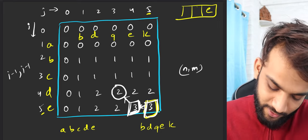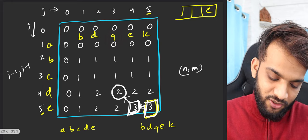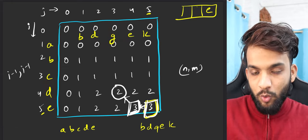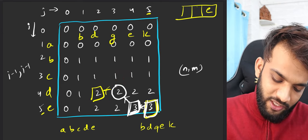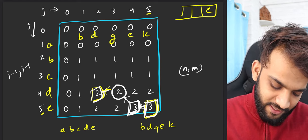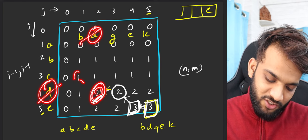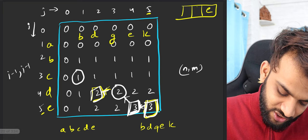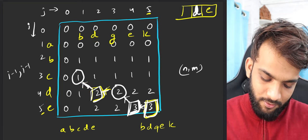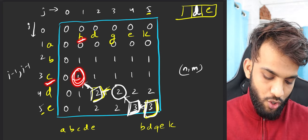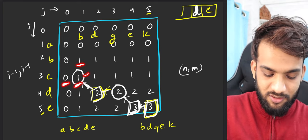Now you're at dp[3][3] = 2. Does 'd' match 'g'? No — so move to the max. Now you're at dp[3][2]: 'd' from s1 and 'd' from s2 — they match! So this 2 came from 1 + dp[2][1] (diagonal). Before moving there, 'd' is common — fill 'd' into the string. Now you're at dp[2][1] = 1. Does 'c' match 'b'? No — move to the max.